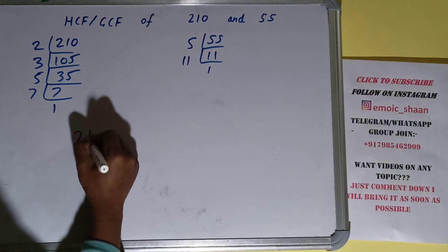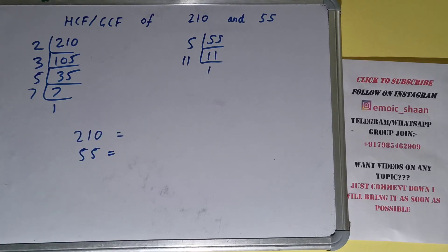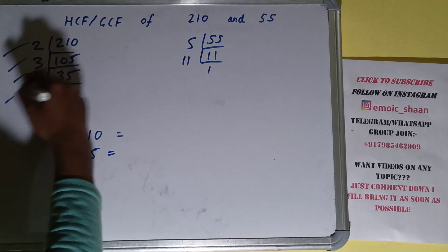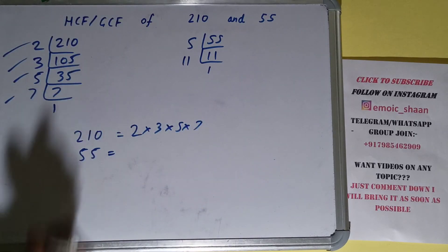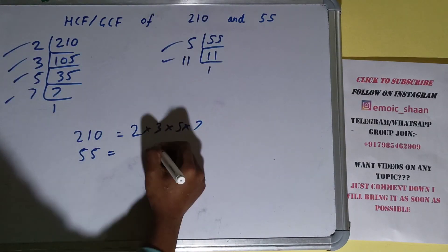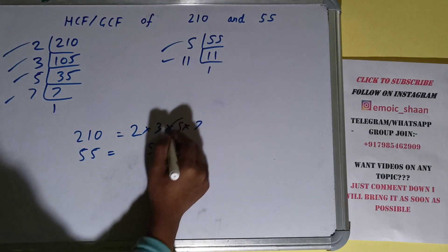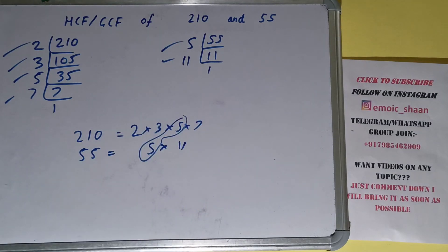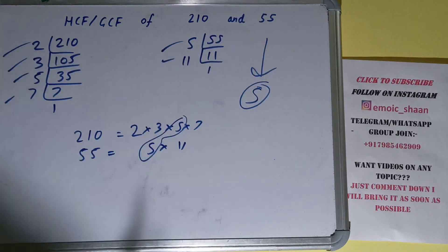The next thing we need to do is write down each of the numbers with their respective prime factors. For 210, the prime factors are 2, 3, 5, and 7. For 55, the prime factors are 5 and 11. The next thing we need to do is circle out the common prime factors. We only have one common prime factor, which is 5, so the answer will be 5.